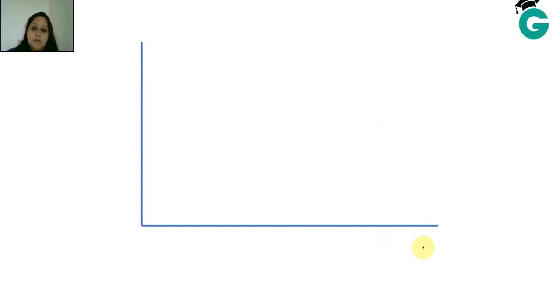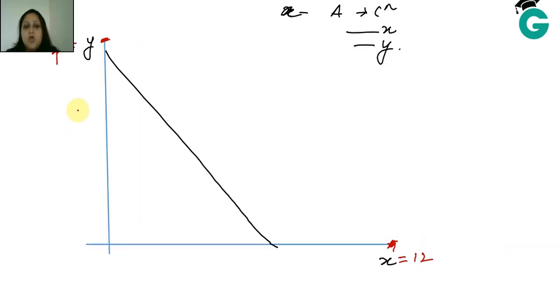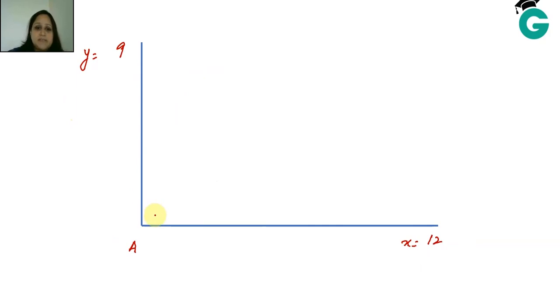My box graph, my axes look like this with no arrows on the side. The total X available is 12 and the total Y available is 9. If I divide this into 12 equal parts, A's endowment is 5,2 which is right here. This is the point which A has initially. This is the endowment of A which A initially has.